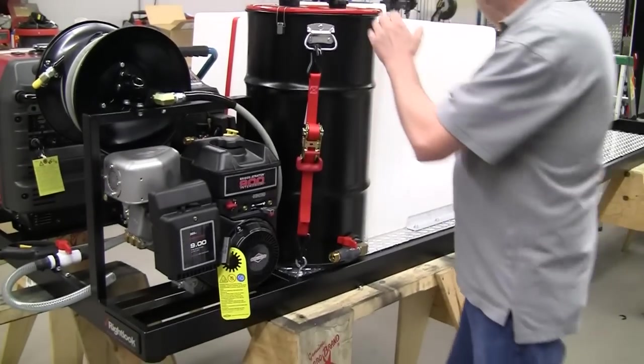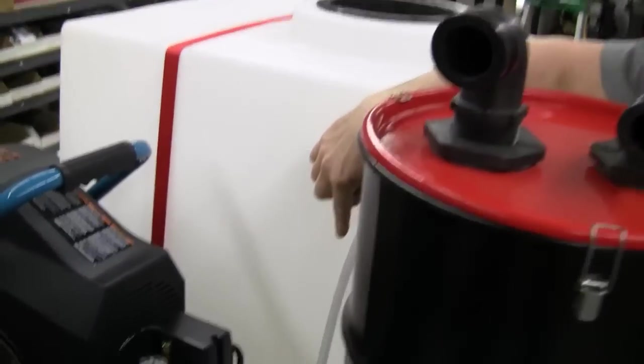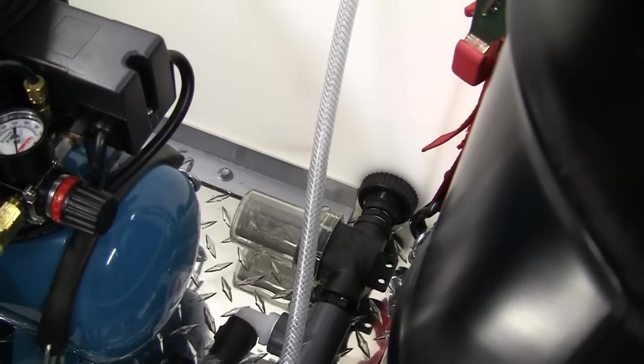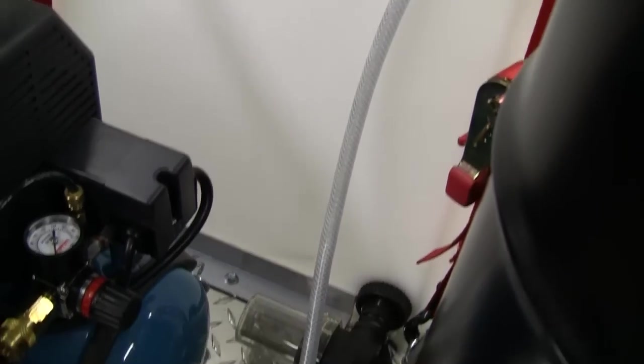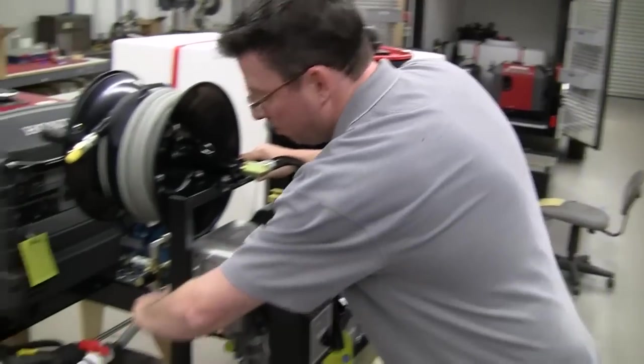If you look directly into the center of the unit here, you'll notice that there is an in-line filter. That filter is a safety feature that we install, so any debris or dirt or anything that gets into your water tank will be captured in that filter prior to getting into your pump here.